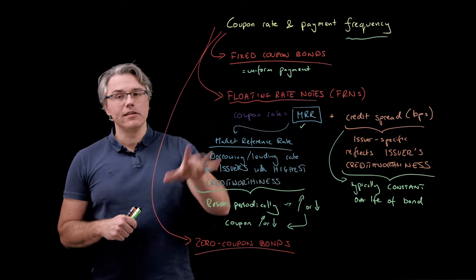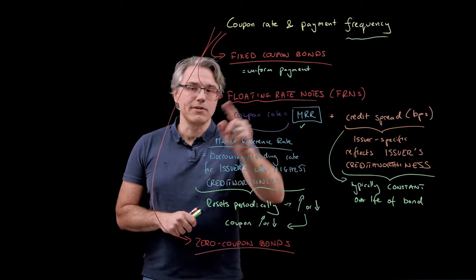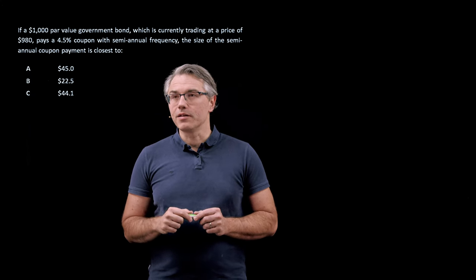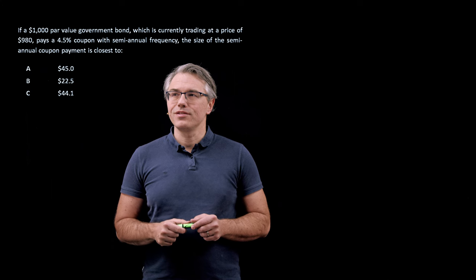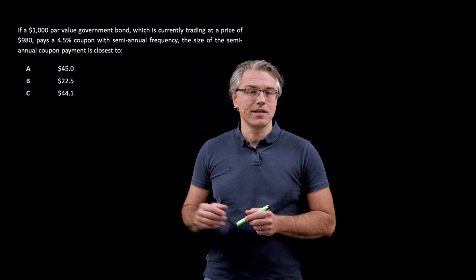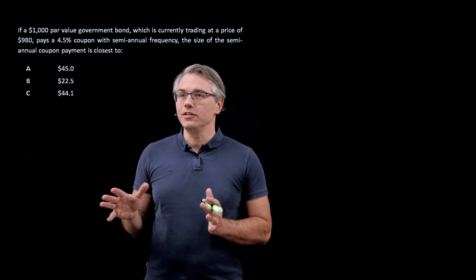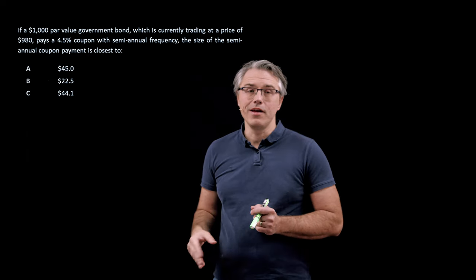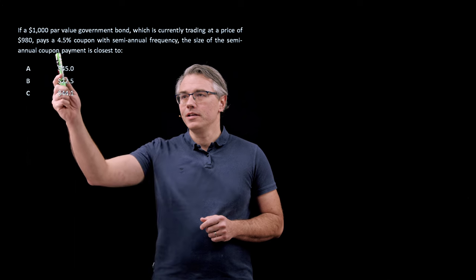Now for some questions. I'm going to clear the board and make space for two exam-style questions exploring the computation of coupons of a fixed nature as well as a floating nature. This first one focuses on a fixed coupon bond: if a $1,000 par-value government bond currently trading at $980 pays a 4.5% coupon with semi-annual frequency, the size of the semi-annual coupon payment is closest to — with three answer options as in the CFA exam.